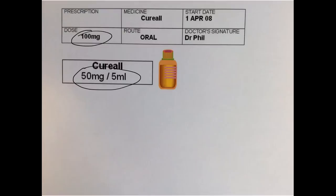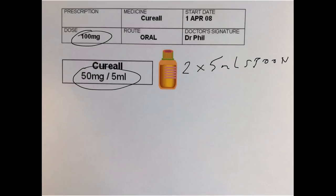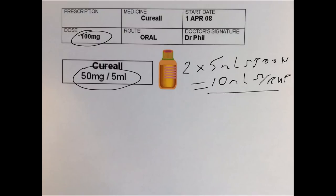So if you give your patient 10ml of syrup, that would be equivalent to 100mg. In other words, 2 times a 5ml spoon. That's what the patient needs to get.